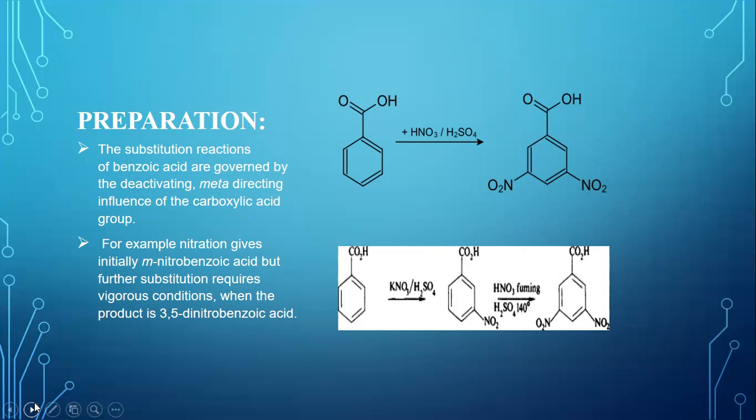But its further substitution requires very vigorous conditions which are in the presence of nitric acid and sulfuric acid at 140 degree Celsius gives 3,5-Dinitrobenzoic acid finally.